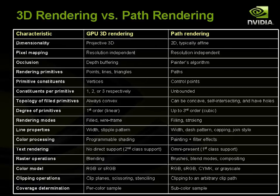Path rendering is different from 3D graphics. If you've used the GPU before, it's primarily for 3D rendering with OpenGL or Direct3D. What this slide summarizes is the characteristics of each rendering paradigm and how they differ. In dimensionality, 3D rendering uses projective 3D, whereas path rendering is normally 2D with affine transformations — scales, rotates, and translates, but not projection. For occlusion, path rendering uses the painter's algorithm, while 3D rendering uses depth buffering. This is a very well-developed rendering paradigm that's been around for 30 years and has its own inner logic.